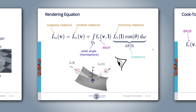Our microfacet BRDF is used in combination with the rendering equation. As a refresher, here is a slide from episode number 4. The rendering equation calculates the outgoing radiance Lo in the direction v for a surface patch at location x with normal n. The outgoing radiance is the sum of two terms. The first term is the emitted radiance Le in the direction v — this term is only larger than 0 if the surface is a light source.